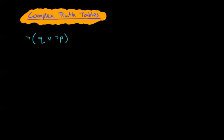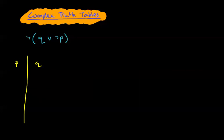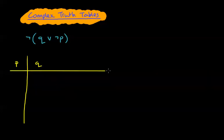It looks really complicated, but remember that all truth tables dealing with two statements always start off the same — you need to build up slowly. First, I'm going to look at the first two columns. We start with P normally and then Q comes afterwards.